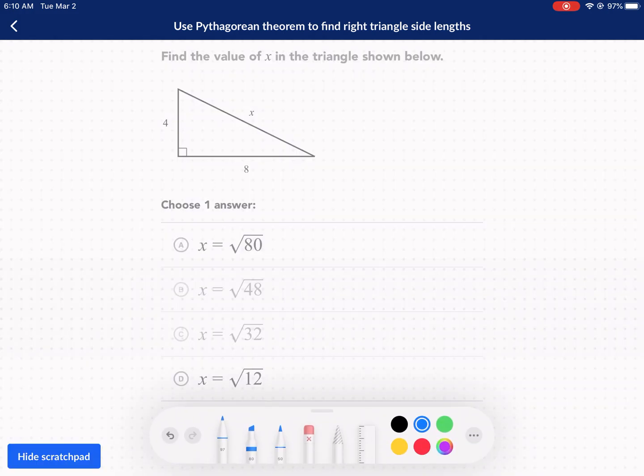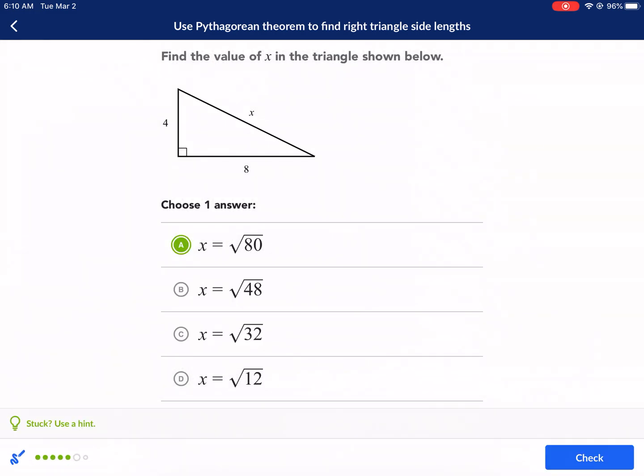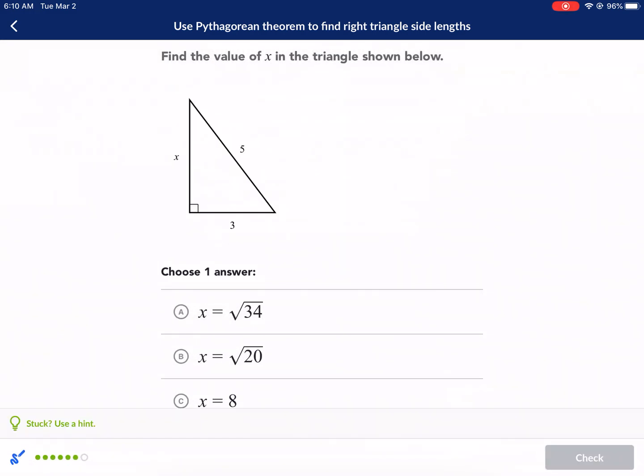This time we're looking for the hypotenuse, so we're going to add the sum of 4 squared plus 8 squared together to find x squared. That's the same thing as 16 plus 64, or what is that, 90? No, 80. And that's equal to x squared. We take the square root, and that's going to be square root of 80, letter A. Next question.